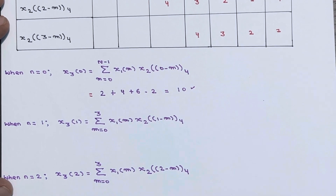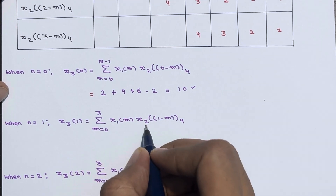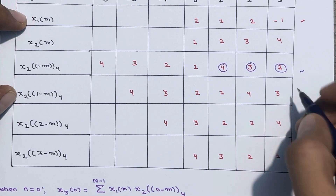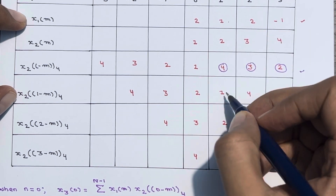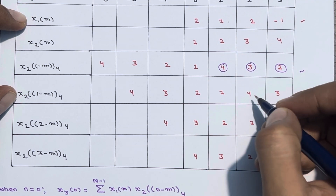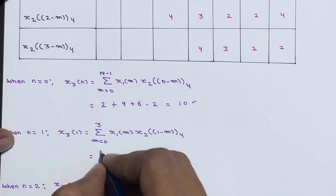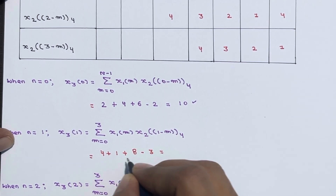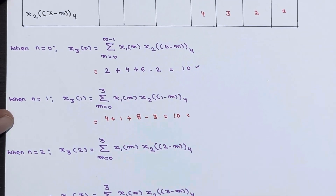When n=1, we need x1(m) and x2(1-m). Multiplying element-wise and summing: 2×2 + 1×1 + 2×4 + (-1)×3 = 4 + 1 + 8 - 3 = 10. So x3(1) = 10.